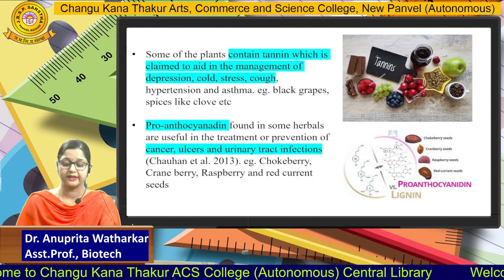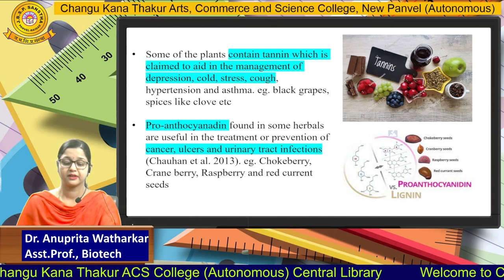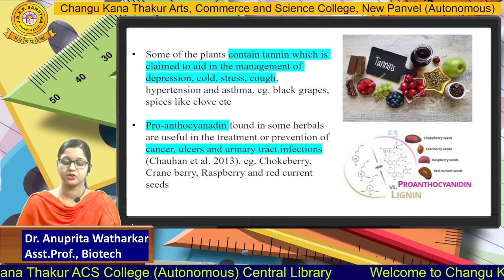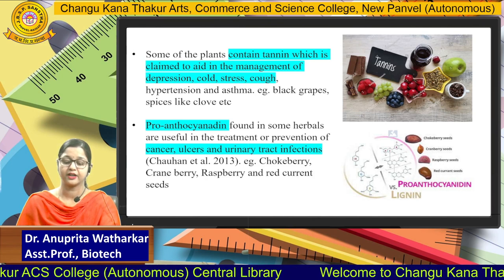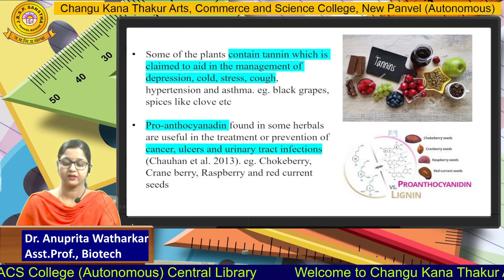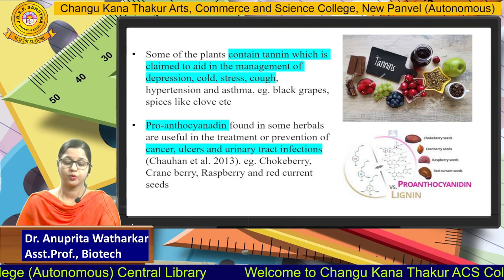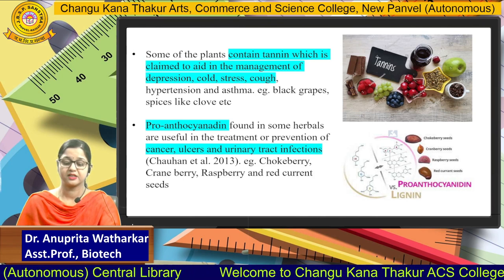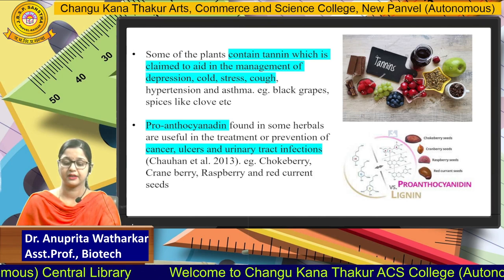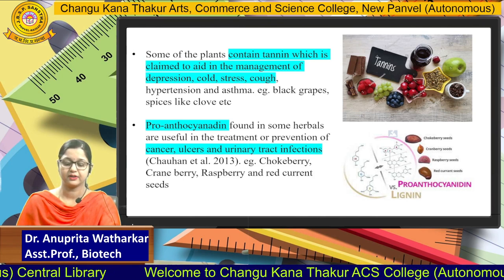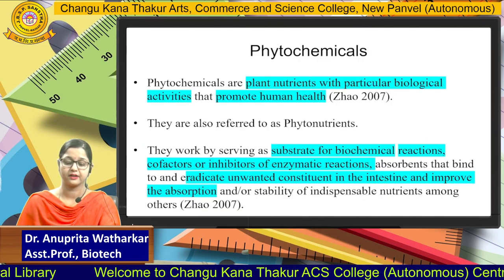Proanthocyanidins are found in herbals and are useful in the treatment or prevention of cancer, ulcers, and urinary tract infections. Proanthocyanidins are present in chungberry, cranberry, raspberries, and red currant seeds.